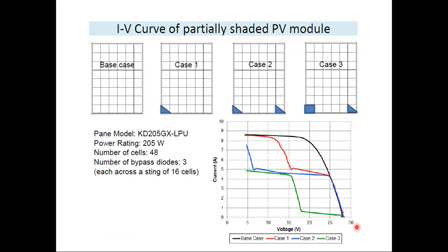Similarly, there will be partial shading of the PV module. In the base case drawn in black, Case 1 shows partial shading of a particular cell. In this configuration, the number of cells is 48 and the number of bypass diodes is 3, depending on the configuration of the PV module. Going with Case 1, there is a reduction in the IV curve, and in the next case shown in blue, there is a further reduction in the IV curve.